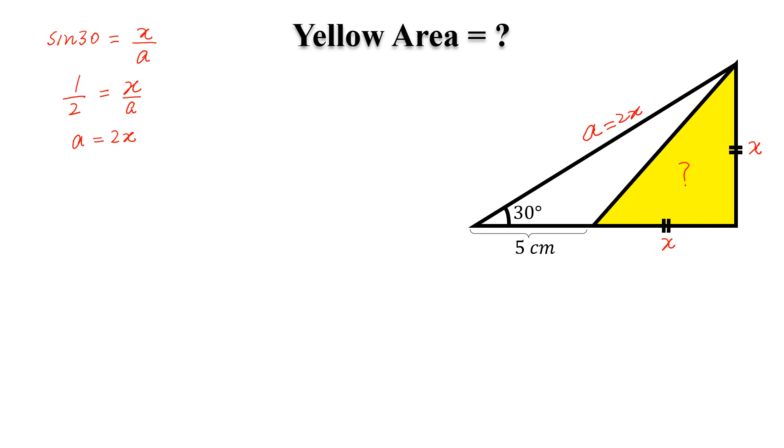Now, by Pythagoras theorem, we can write (x+5)² + x² = (2x)². Simplify this, and we will get 2x² + 10x + 25 = 4x².